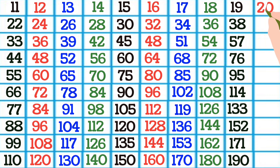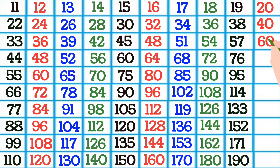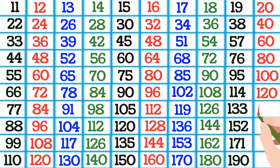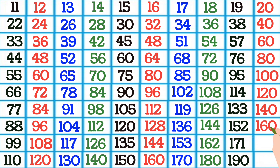20 1s are 20, 20 2s are 40, 20 3s are 60, 20 4s are 80, 20 5s are 100, 20 6s are 120, 20 7s are 140, 20 8s are 160, 20 9s are 180, 20 10s are 200.